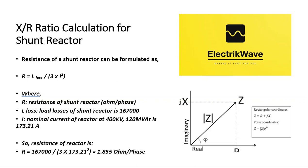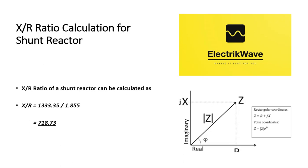Resistance of a shunt reactor can be formulated as R equals L_loss divided by 3 times I squared, where R is resistance in ohm per phase, L_loss is load losses of shunt reactor (167,000 W), and I is nominal current at 400 kV, 120 MVAR, which is 173.21 A. So resistance of reactor R equals 167,000 divided by (3 × 173.21²) equals 1.855 ohm per phase. Therefore, X/R ratio of the shunt reactor equals 1333.35 divided by 1.855 equals 718.73.